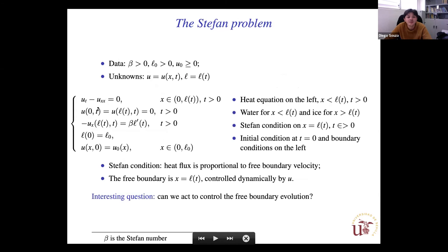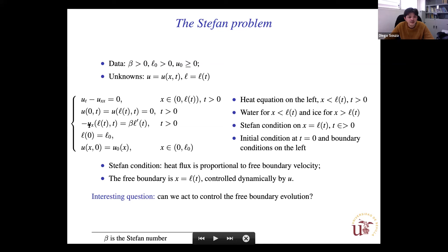In the one-phase Stefan problem, we have a heat equation posed on a non-fixed domain, together with a boundary condition and the Stefan condition, which describes how the free boundary evolves. The Stefan condition states that the heat flux through the free boundary is proportional to the velocity of the free boundary.